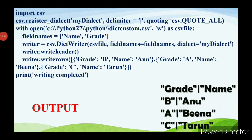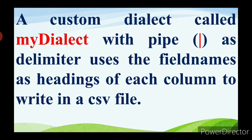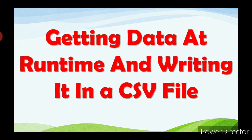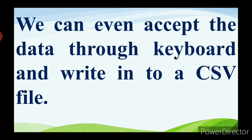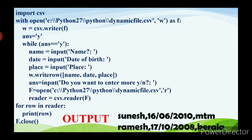The next topic is getting data at runtime and writing it in a CSV file. You can accept data through the keyboard and write it into a CSV file — that is runtime input. During runtime you give input data using the keyboard. In the program on page number 262, the second, fourth, and sixth data can be given during runtime. Then, points to remember.